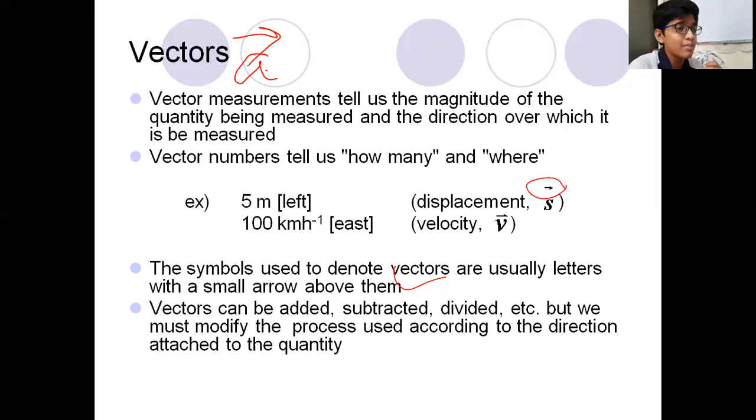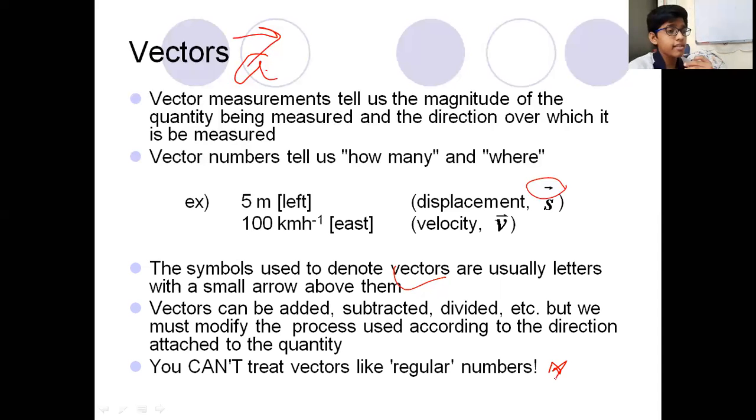We have some important disclaimer even about vectors. Vectors can be added, subtracted, divided, etc., but we must modify the process used according to the direction attached to the quantity. We have some special rules, the laws of vector algebra to do such operations on vectors. You can't treat vectors like regular numbers. This is very, very, very important. You can't treat vectors as regular numbers.